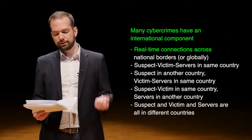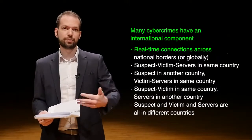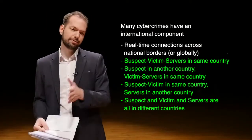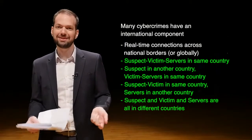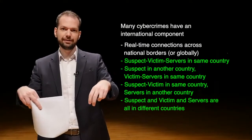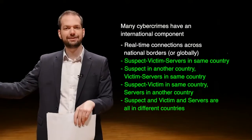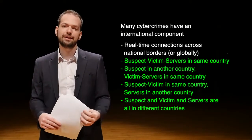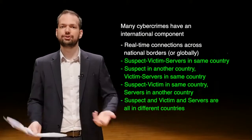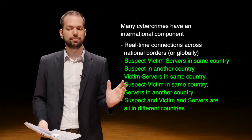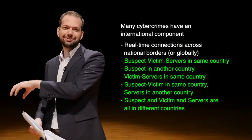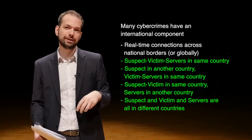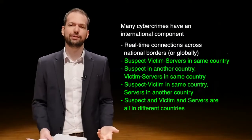Many cybercrimes have an international component with real-time connections across national borders. The suspect, victim, and servers can be in any combination of countries — the suspect may be in another country, or the suspect and victim might both be in Korea but using Gmail based in the U.S. In the most common scenario, a suspect in Thailand or China is trying to steal money from a Korean victim using an American server, involving at least three different countries. This makes these crimes very difficult to investigate.